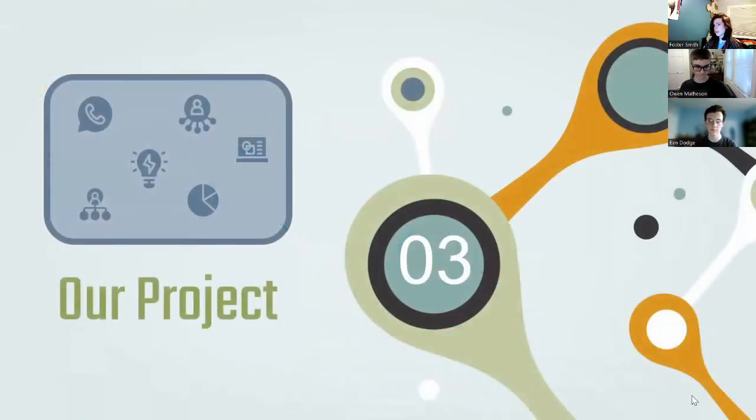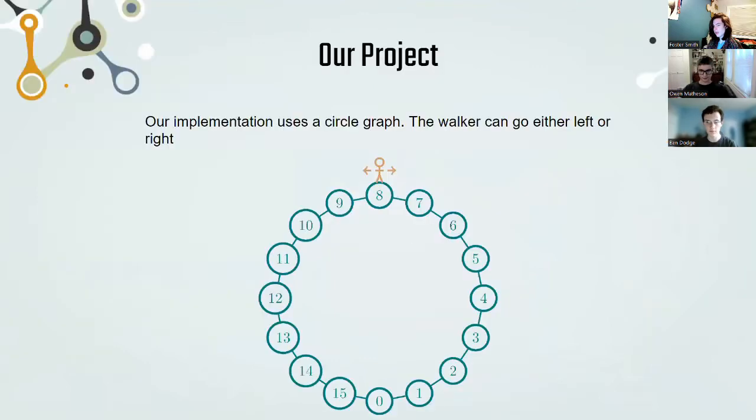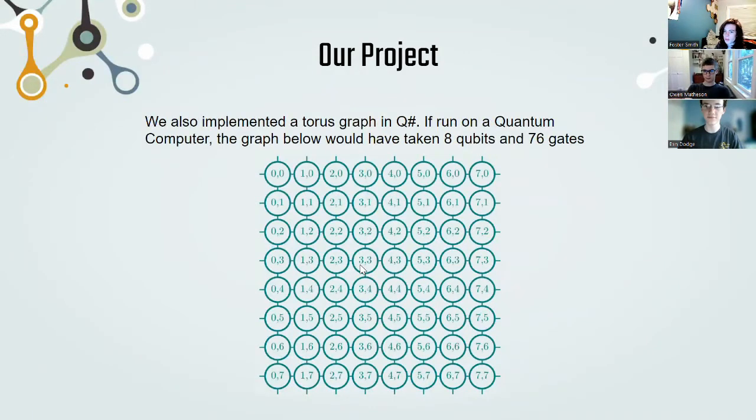Our project was an implementation of quantum walks. In our implementation we used a circle graph in which the walker can only either go left or right. It has a 50% probability of doing either. We also implemented a graph of a torus. As you can see it's connected in a lattice-like pattern where each edge will connect to the other edge. For example the 7-7 node would connect to the 0-7 node and the 0-7 node if going down would connect to the 0-0 node.